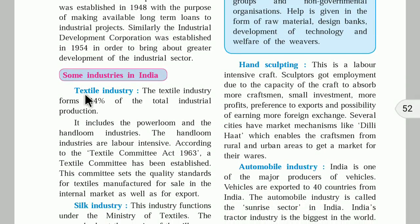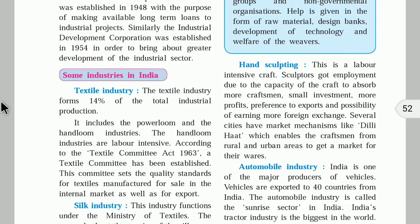The first important industry in India is the textile industry. 14% of total industrial production comes from the textile industry. Textiles are made in homes as well as in big industries. The textile industry produces cloth from cotton and other synthetic fibers like nylon and terylene.